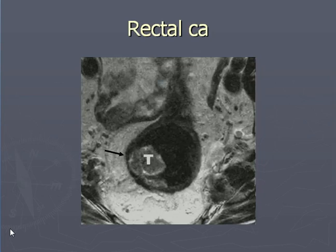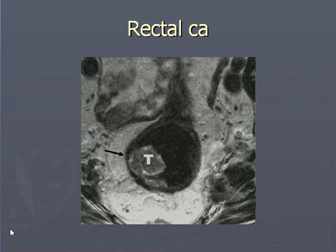Here is rectal carcinoma — the T indicates the tumor. You can get the rectal image with the help of MR, you can stage it, you can see the lymph nodes, you can see the involvement of adjacent structures, the displacement of fat and the involvement of the layers of the rectum for staging and further evaluation.